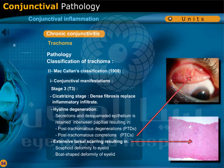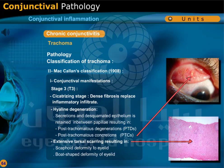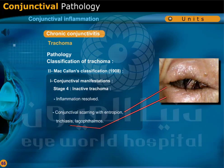Hyaline degeneration: secretions and desquamated epithelium are retained between papillae, resulting in post-trachomatous degenerations (PTDs) and post-trachomatous concretions. Stage 4: inactive trachoma.